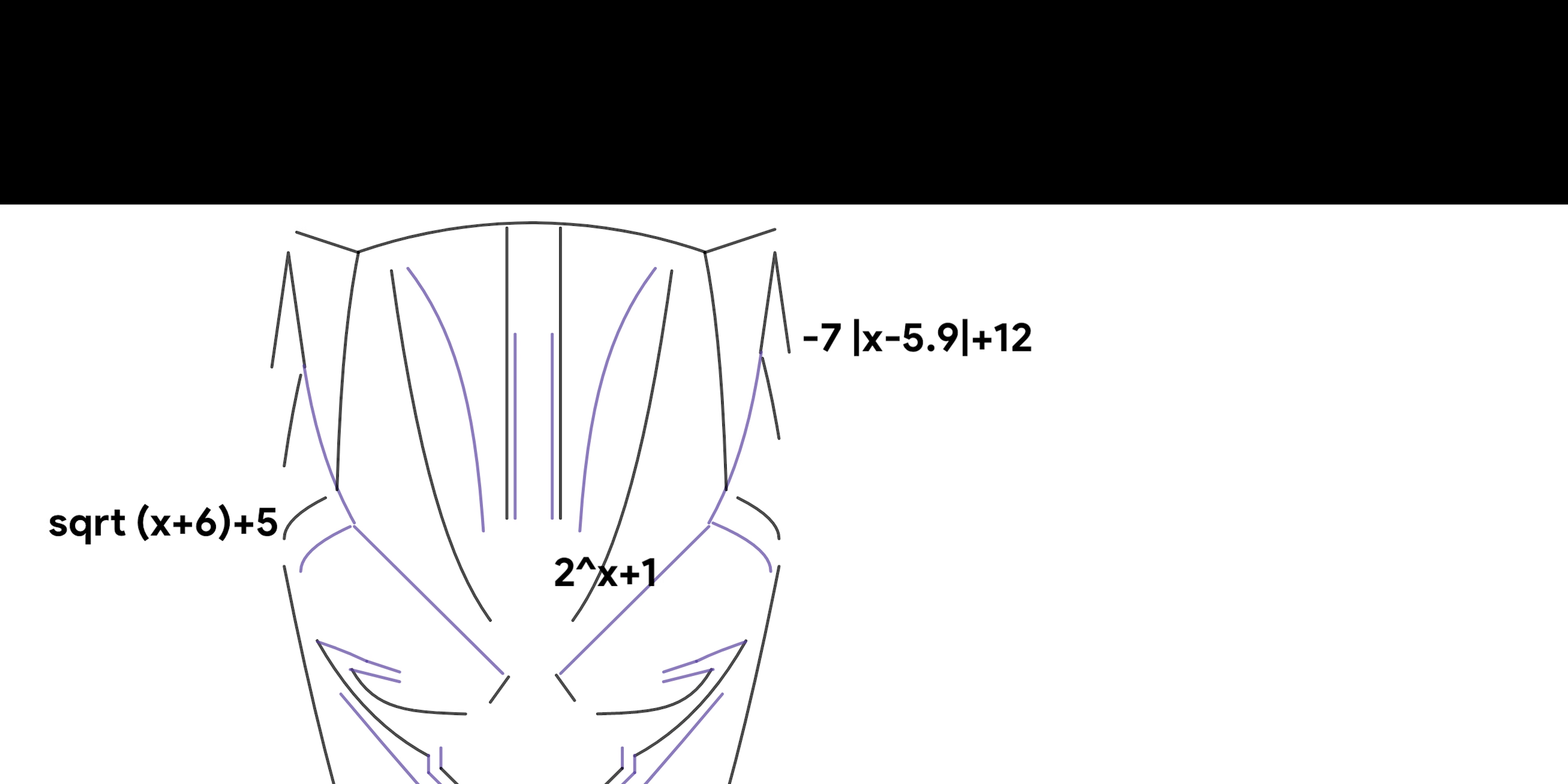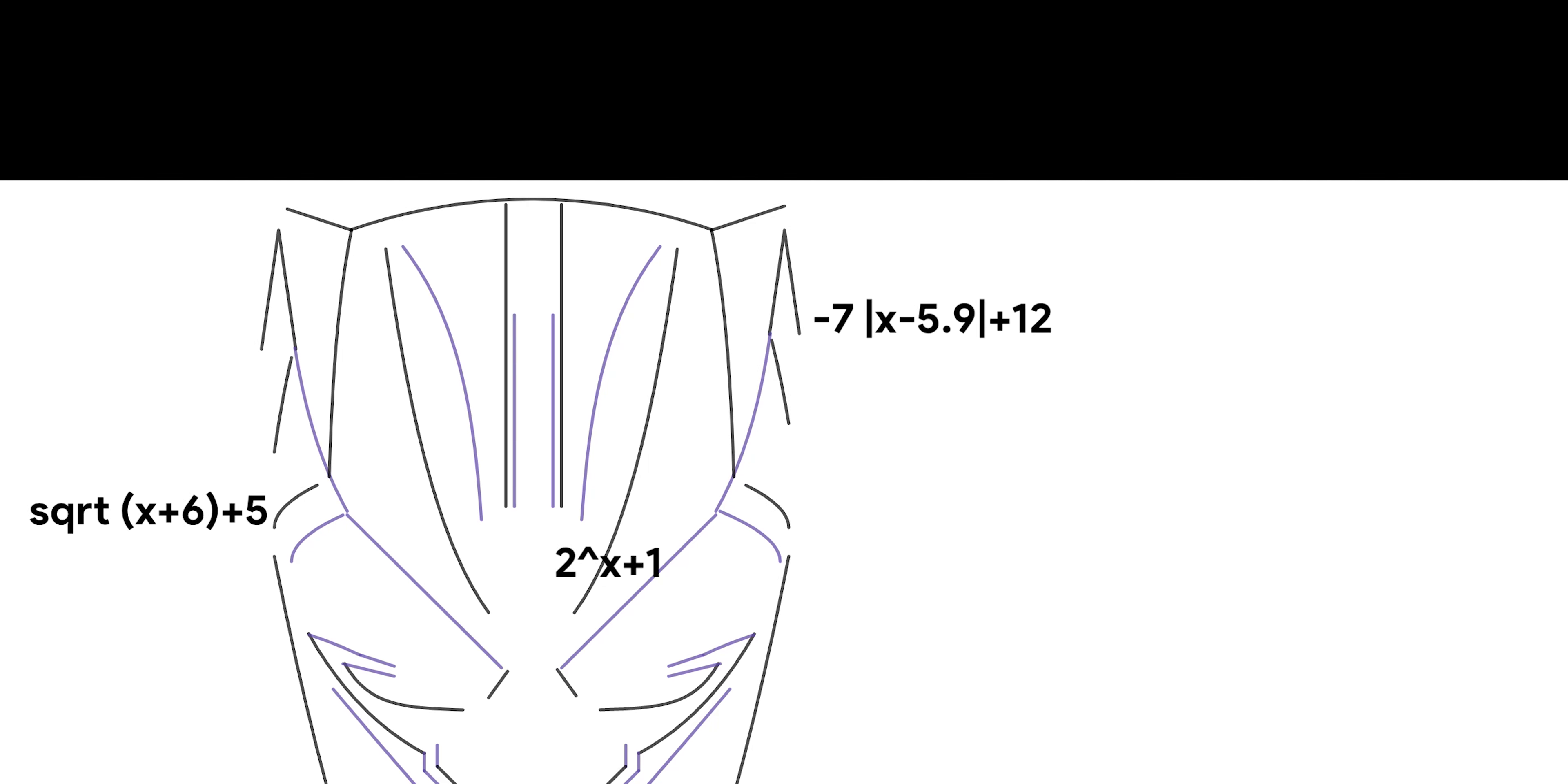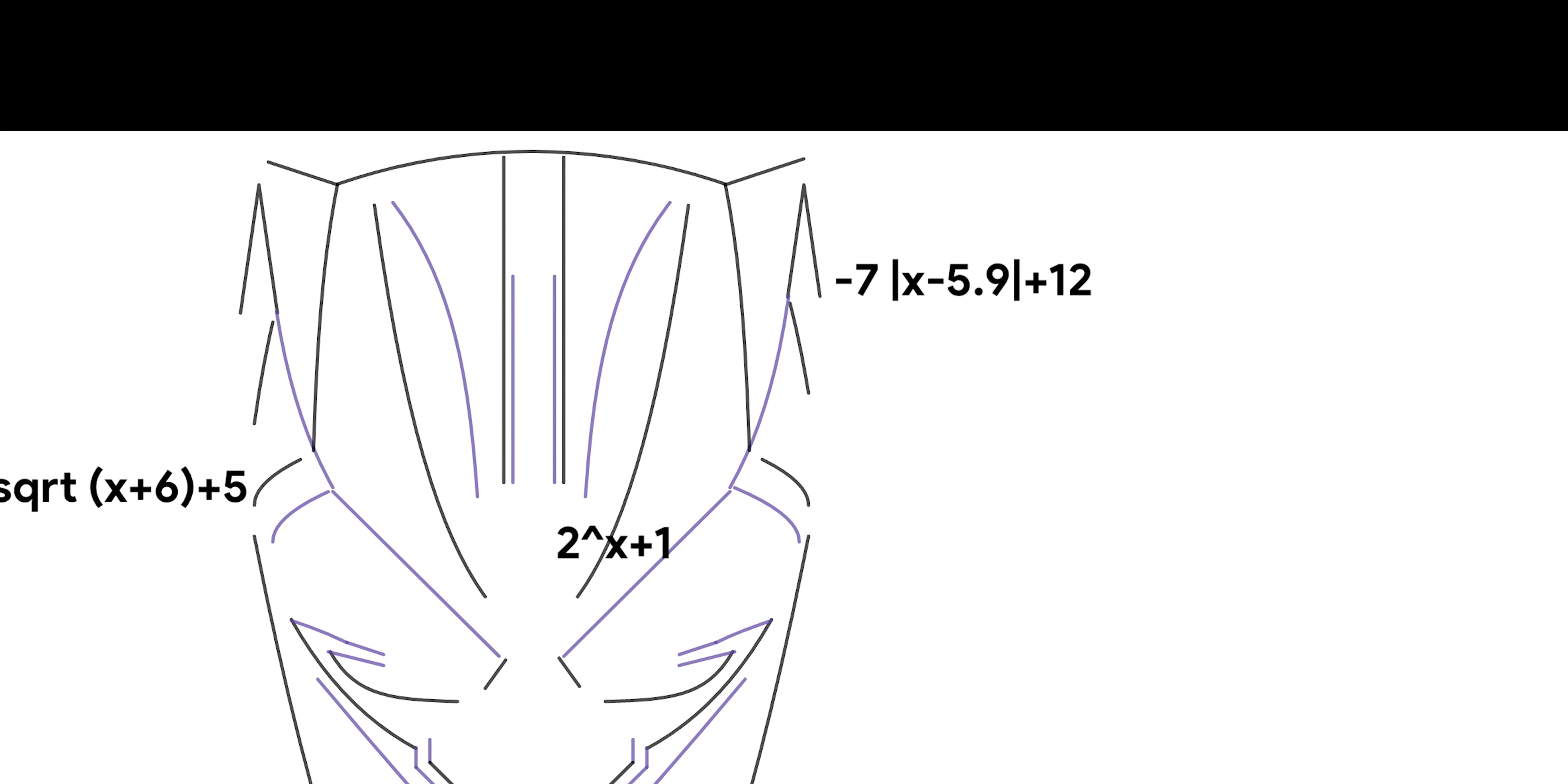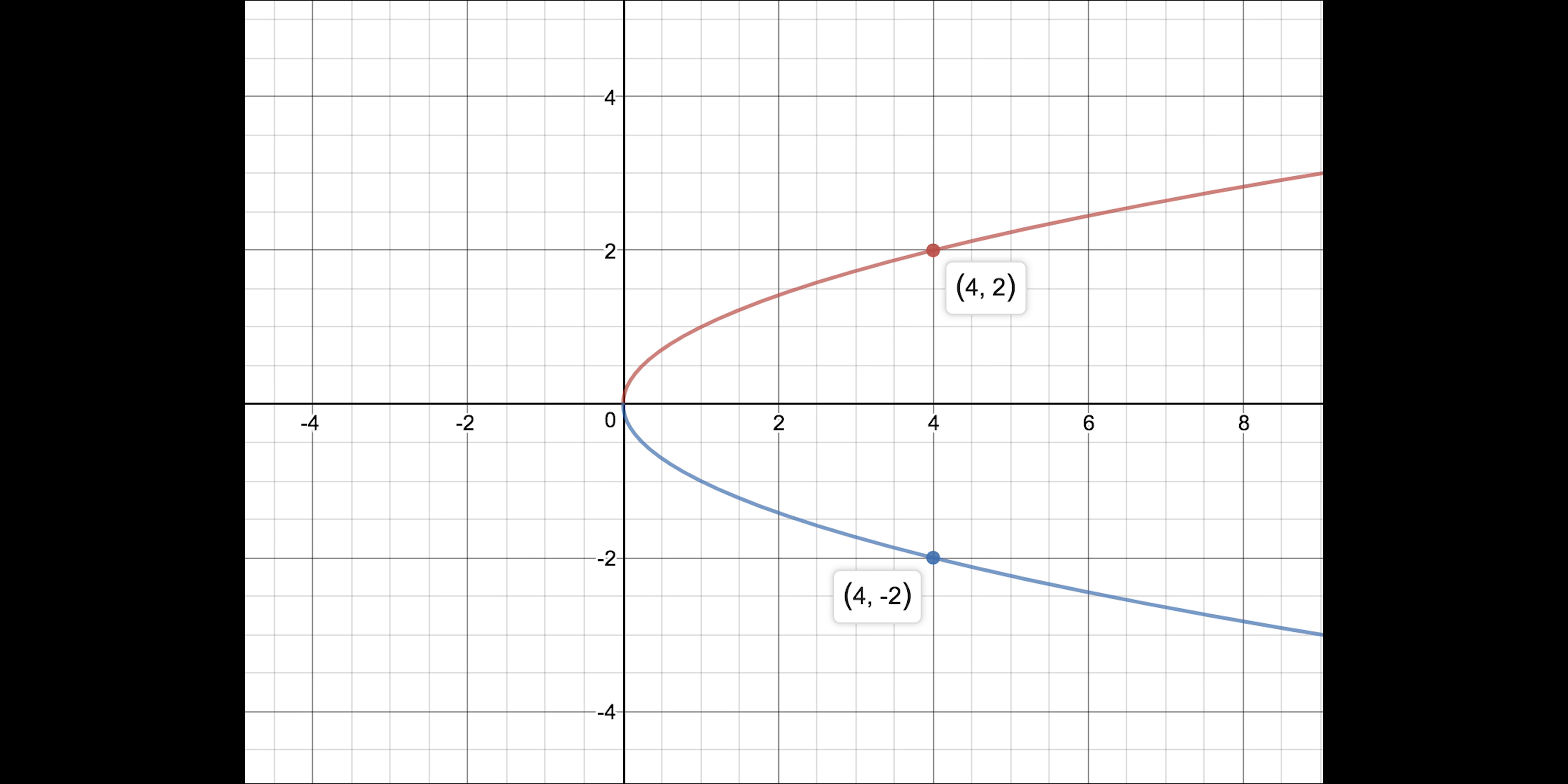Third is negative 7 absolute value of x minus 5.9 plus 12. It looks complicated, but it's fairly simple. The negative in front of the 7 means that I reflected the graph over the x-axis. To show you what I mean, think about if you had a negative square root of x. If x was 4, the square root of x would be 2. Then you negate it to get negative 2. By doing that, you reflected over the x-axis.